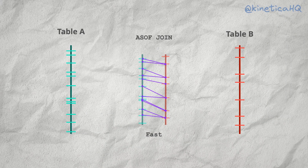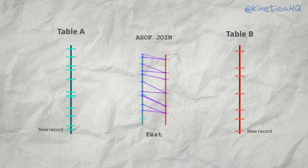As-of joins are computationally expensive, but Kinetica can perform these exceptionally fast because it is a fully vectorized database. It is so fast that not only can Kinetica perform these joins in less than seconds — it can keep these computationally expensive views updated in real time as new data keeps streaming into the input tables. If there were records added to the input tables a second ago, those would be updated and matched in the join view within seconds inside Kinetica.